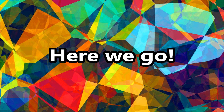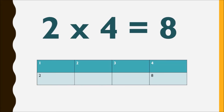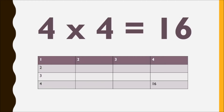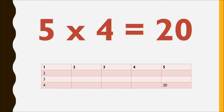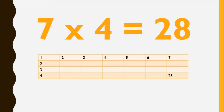Here we go! 1 times 4 is 4. 2 times 4 is 8. 3 times 4 is 12. 4 times 4 is 16. 5 times 4 is 20. 6 times 4 is 24. 7 times 4 is 28.